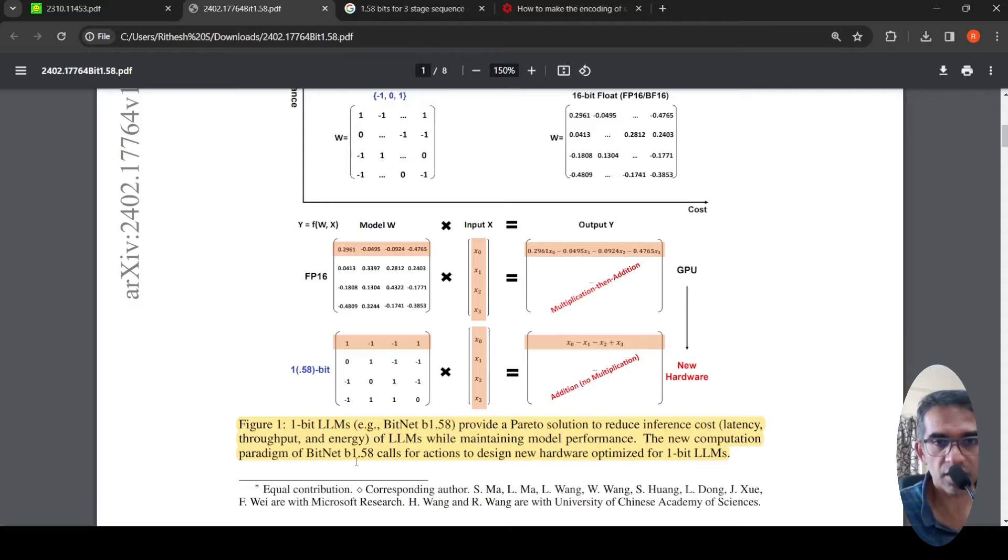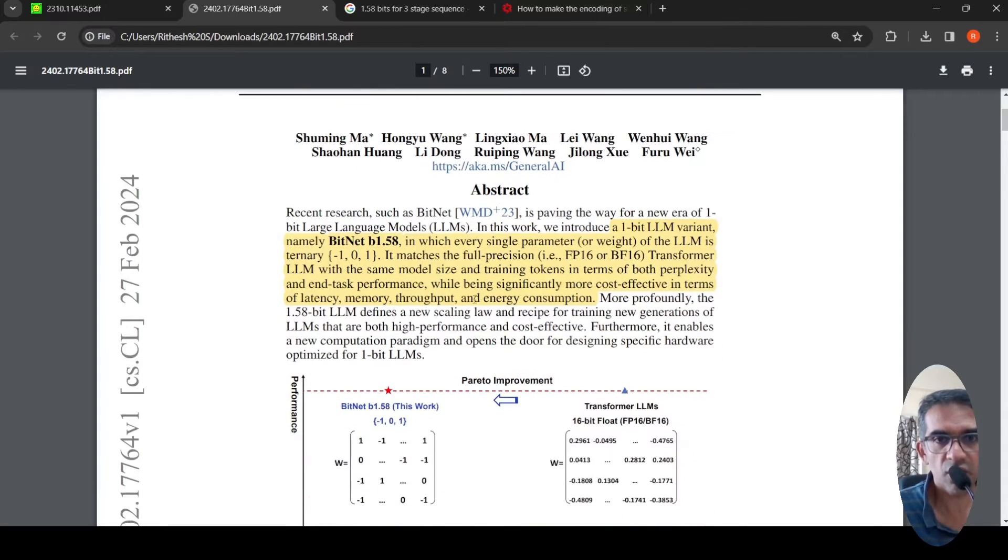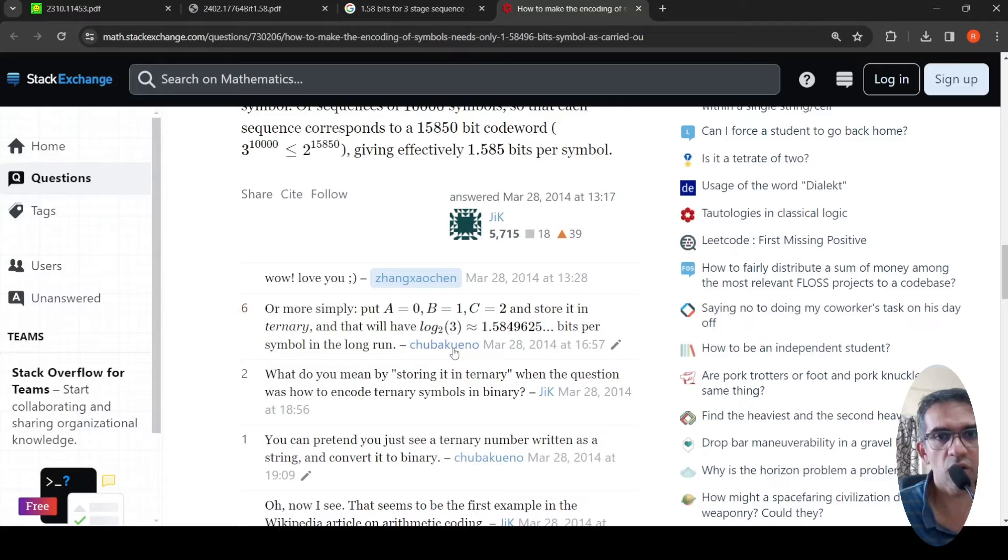Now, where does this 1.58 bits come from? So when you convert these weights into ternary values of minus 1, 0 or 1, so basically you have three states. When you have these three states, when you want to encode it, you want to store it in ternary. You have this formula which says log 2 of 3, which is 1.58 bits per symbol.